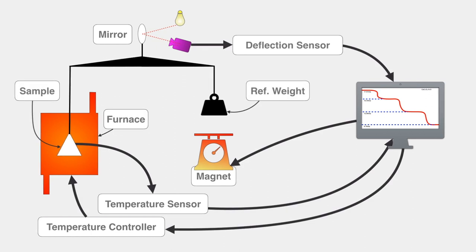The amount of current supplied to the magnet depends on the weight loss. So finally, this is converted into the weight loss of the system and which is recorded on the graph in the y-axis while the temperature is recorded on the x-axis. So finally, we can get a graph of loss in the weight versus temperature or time.